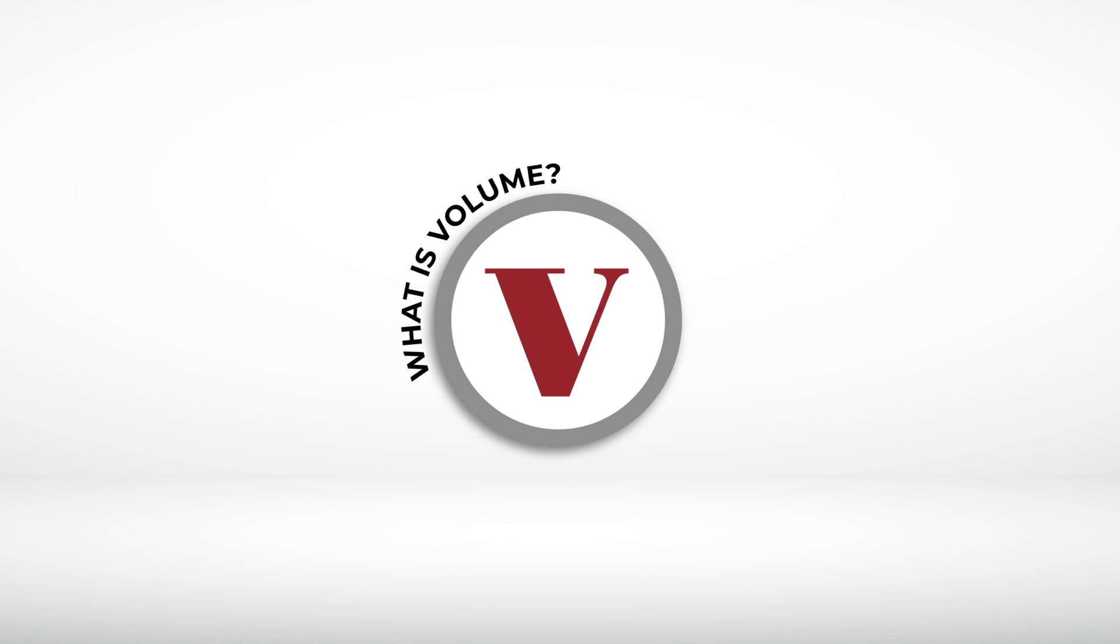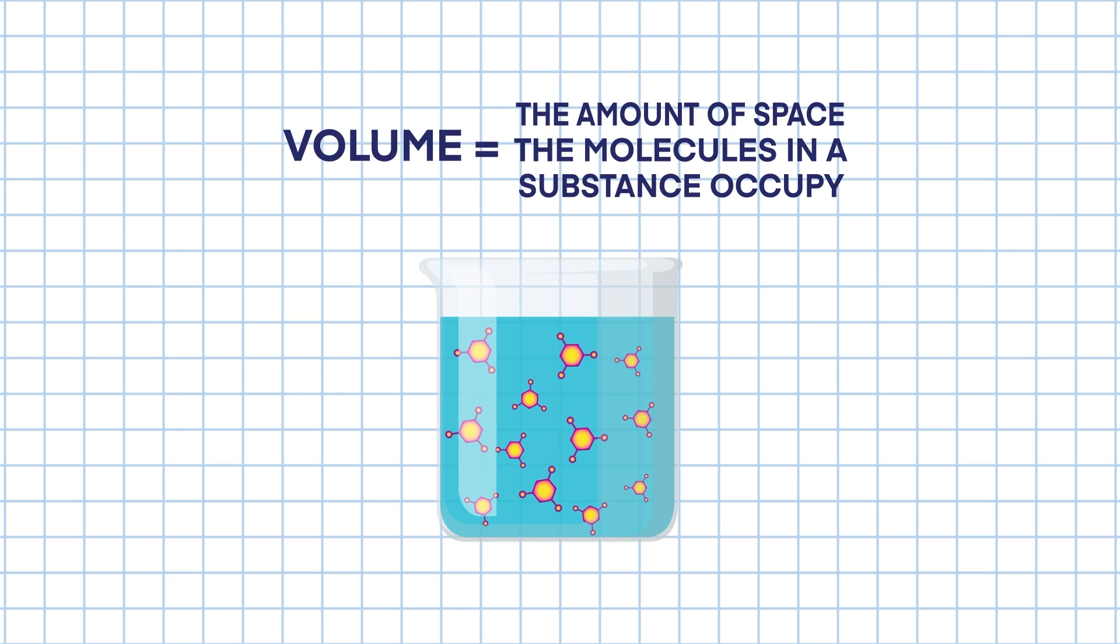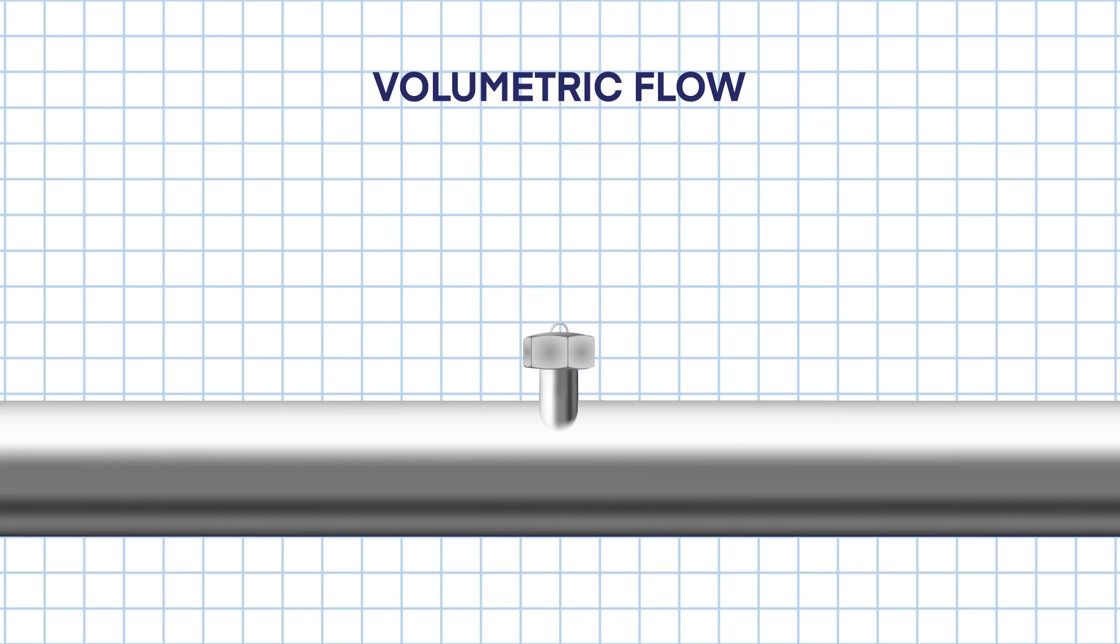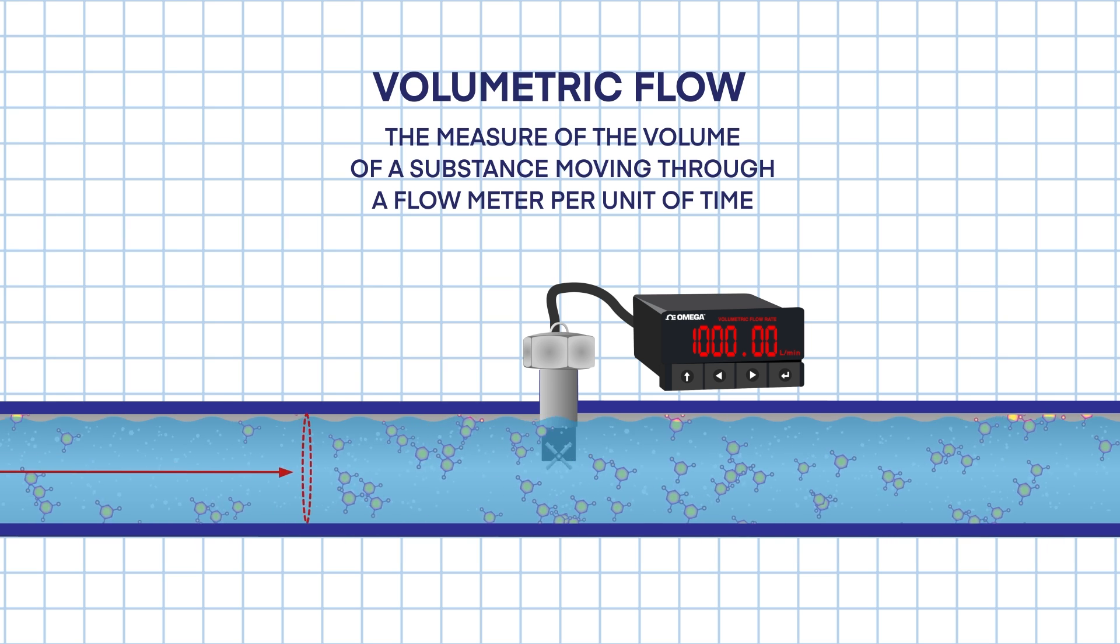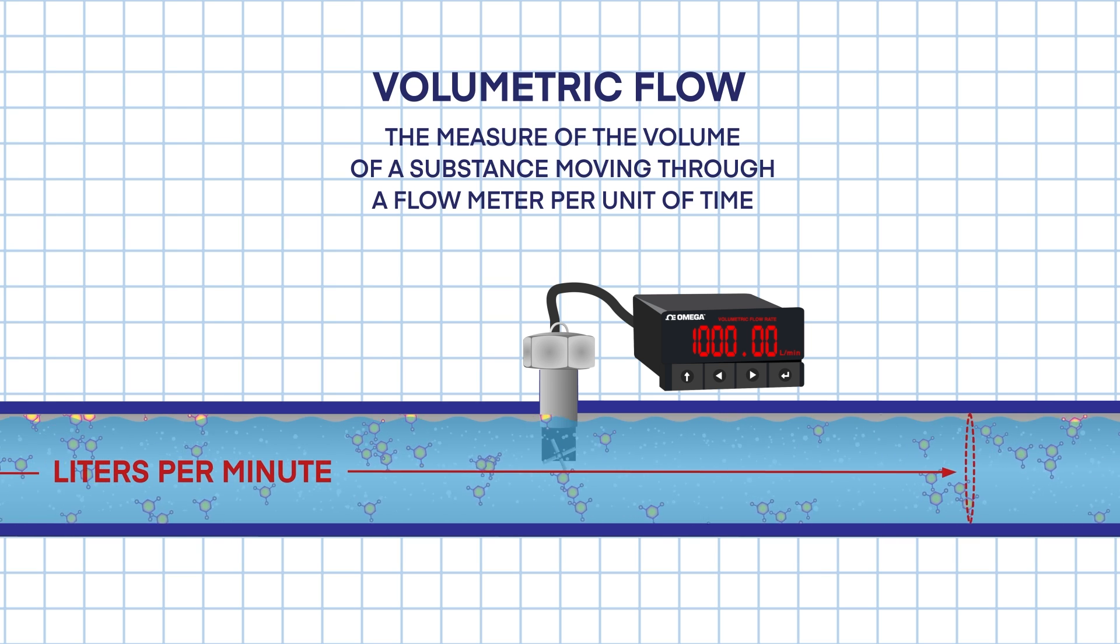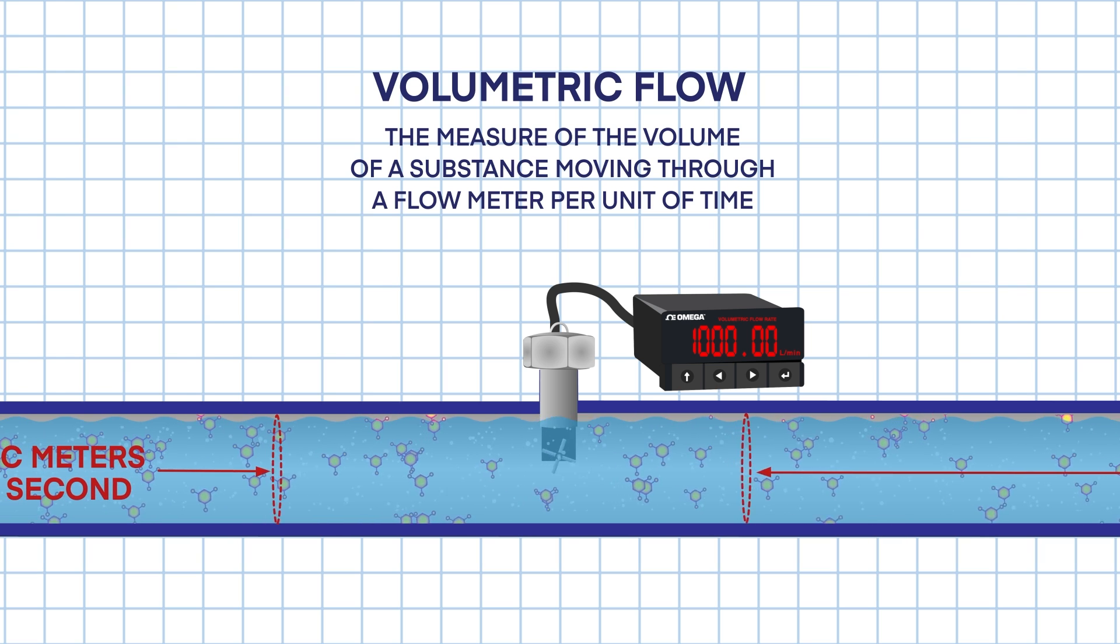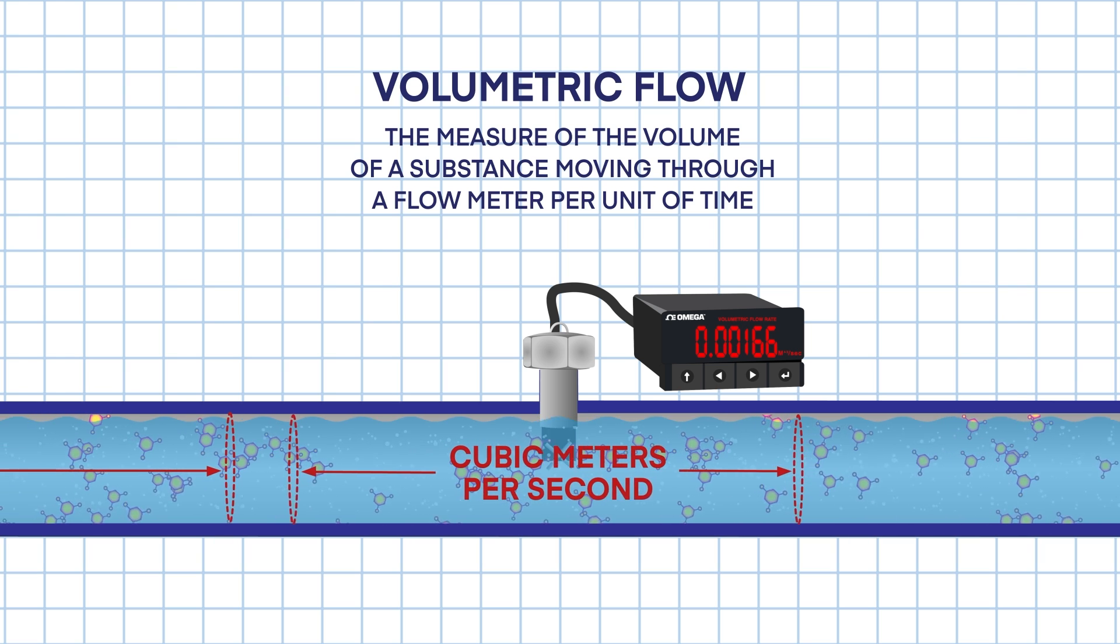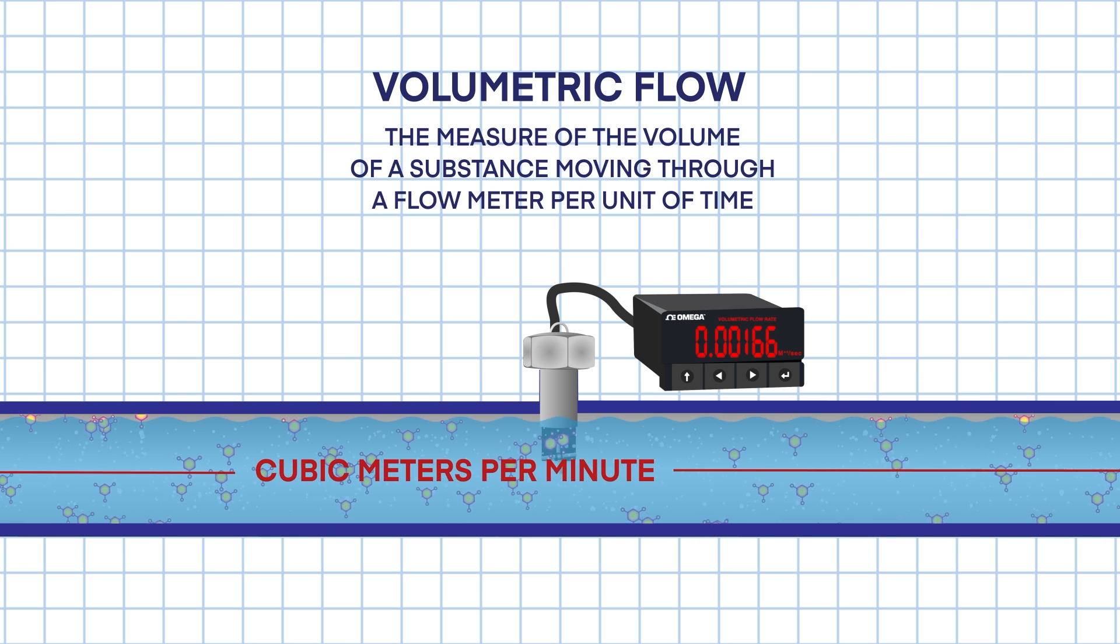Now, if we look at volume, volume is the amount of space the molecules in the substance occupy. So, volumetric flow is the measure of the volume of a substance moving through the flow meter per unit of time. Typical units of volumetric flow are liters per minute or cubic meters per second or cubic meters per minute.